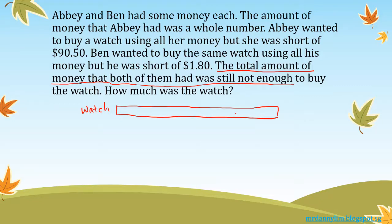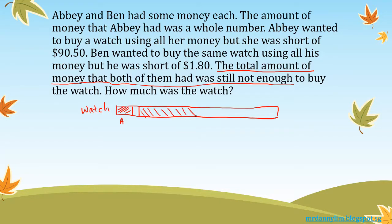Abby wanted to buy the watch using all her money but she was short of $90.50 — that means she has quite little money, so I draw a very small bar for Abby. Then for Ben, instead of drawing left to right I draw from right to left, because together they're not going to take up the whole watch. I leave a small gap, and the remaining part is what Ben has.